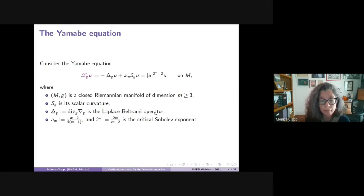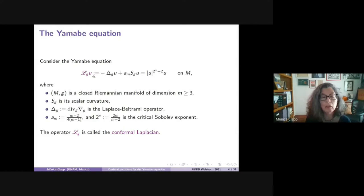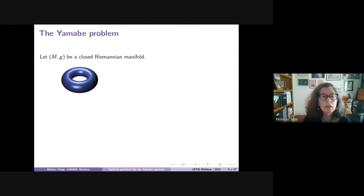The exponent 2* is the usual critical Sobolev exponent in dimension m. The operator formed by combining delta_g and a_m times S_g is called the conformal Laplacian, and it has the property that it is conformally invariant. This makes it a suitable operator to treat problems in conformal geometry.